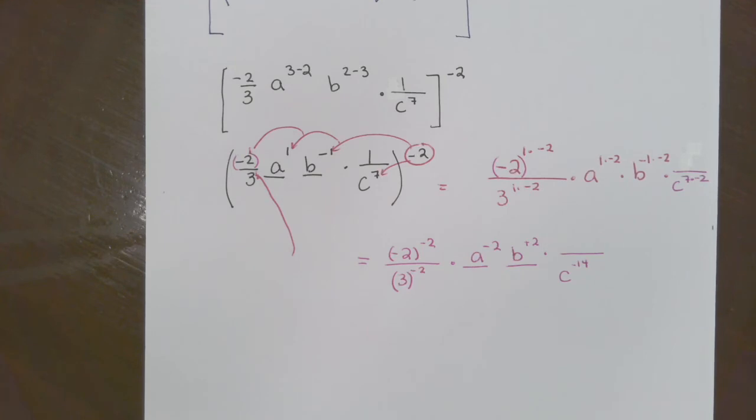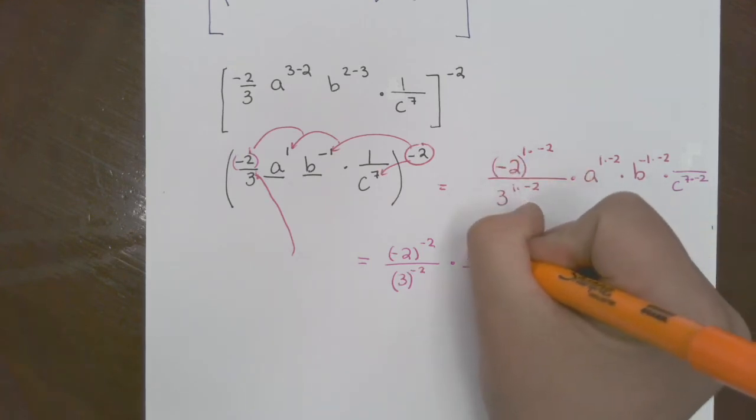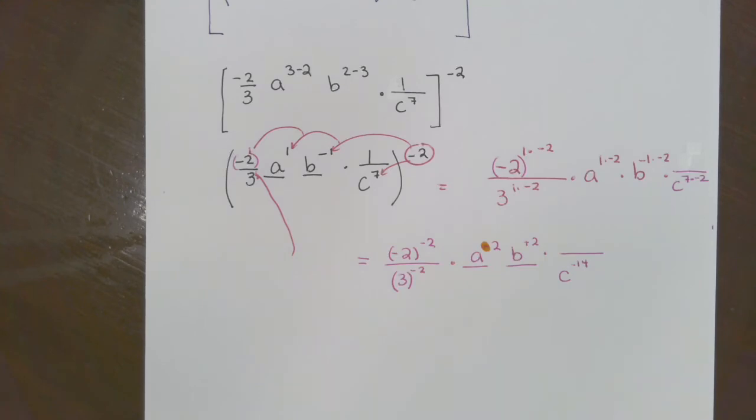All right, beautiful people. Let's talk about a few different things. What does it mean when we have a negative? You've got to flip it. So if I'm talking about a negative, a to the negative second power, where does that a belong? On the bottom. Oh careful. So we've got a squared on the bottom.